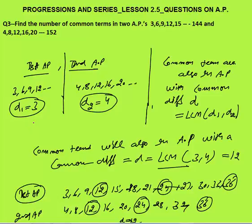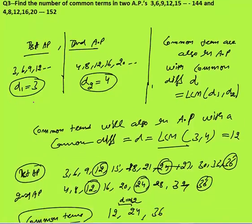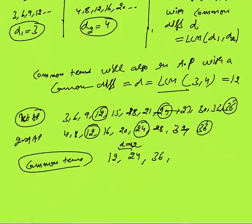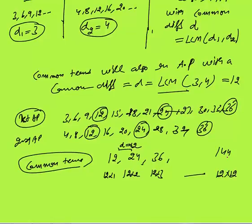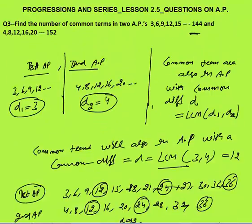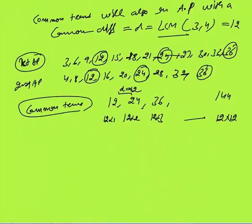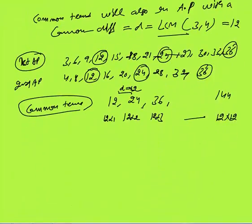The last term in the first AP is 144. The common terms are 12×1, 12×2, up to 12×12 = 144, since 144 appears in both APs. Therefore the number of common terms is 12.